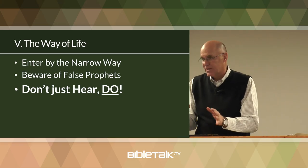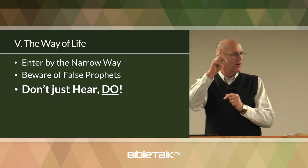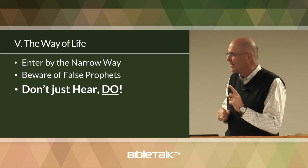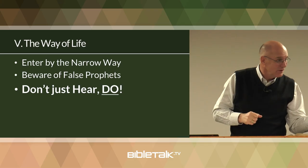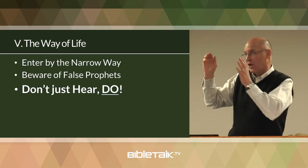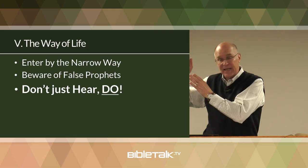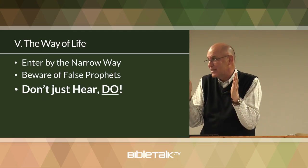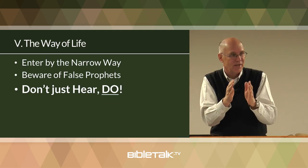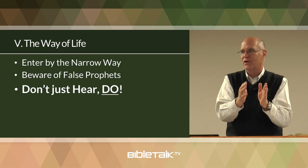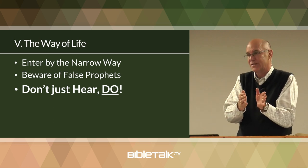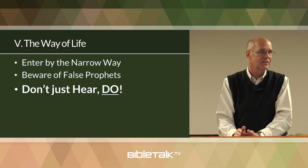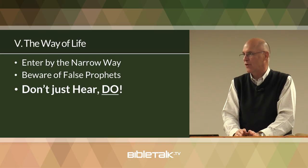In Acts, at the beginning of chapter one, how many people are in the upper room still hanging in? 120. After three years and miracles, there's like 120. So the gate has always been very narrow. Don't feel discouraged if you're in the minority, brothers and sisters — we're always going to be in the minority. How do I know? Jesus said so.